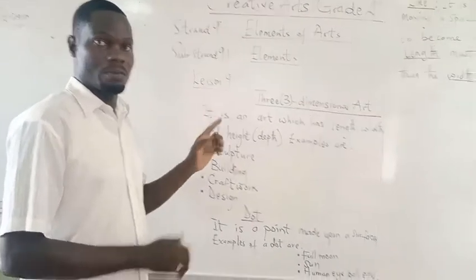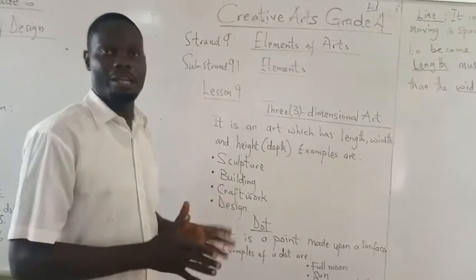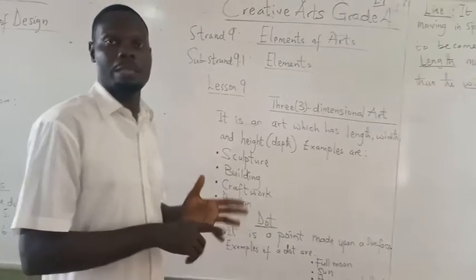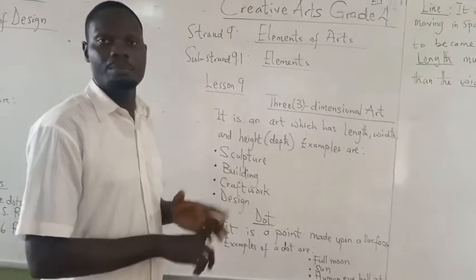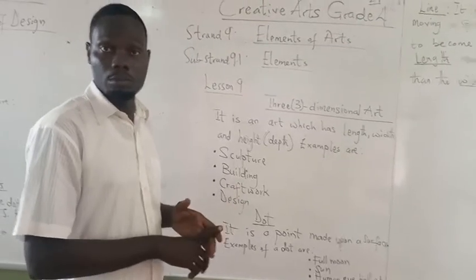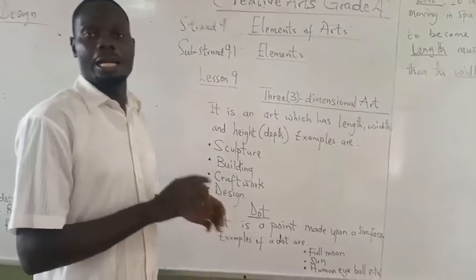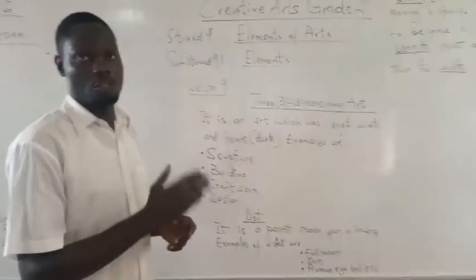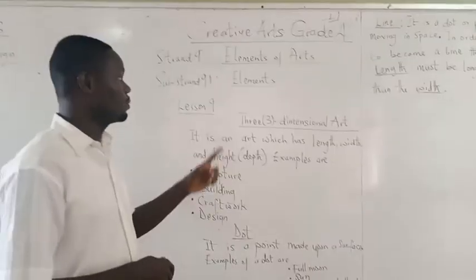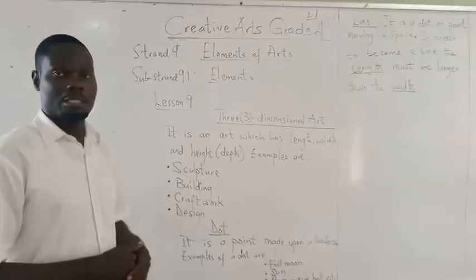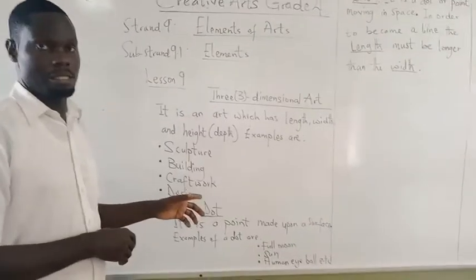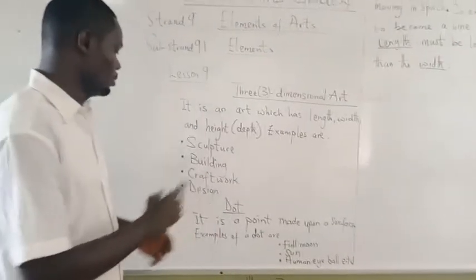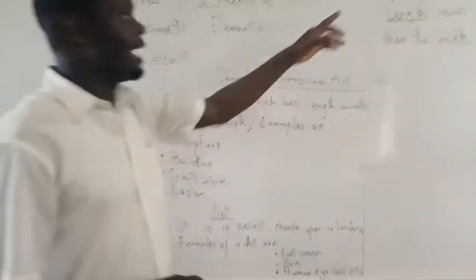And under it we stated different types. We talked about dot, line, shape, form, texture, color, and so on. Now we are going to look at three dimensional. So that's what we are looking at. Now let's go to the next part — we say line.